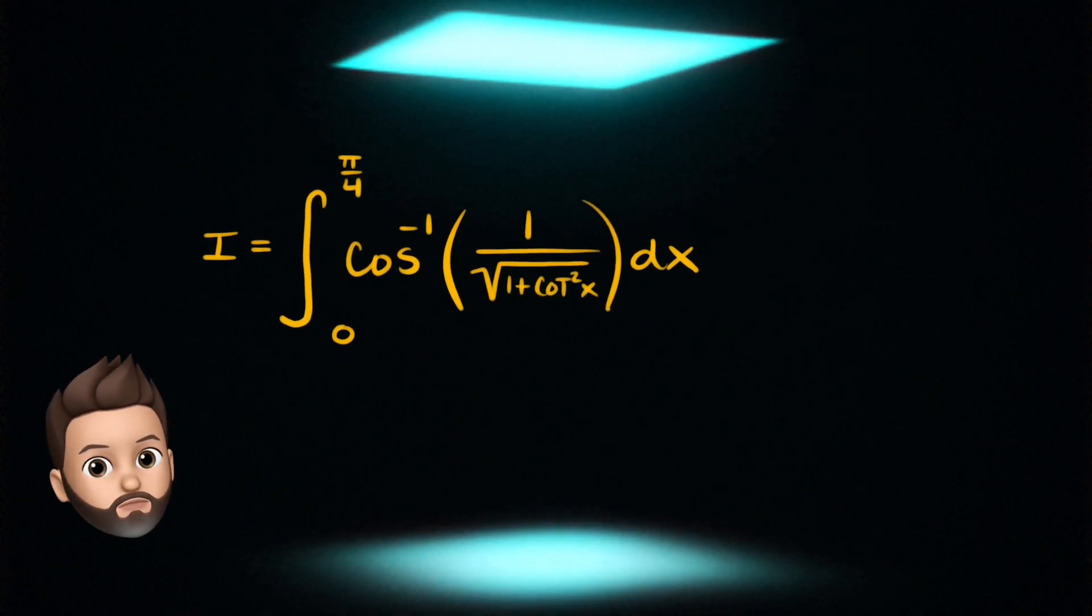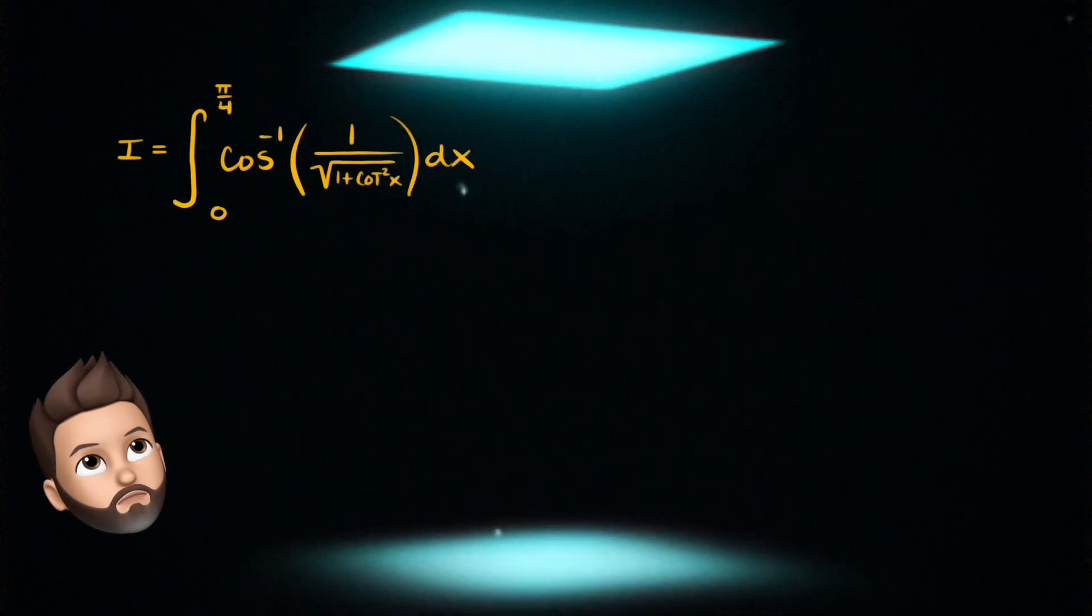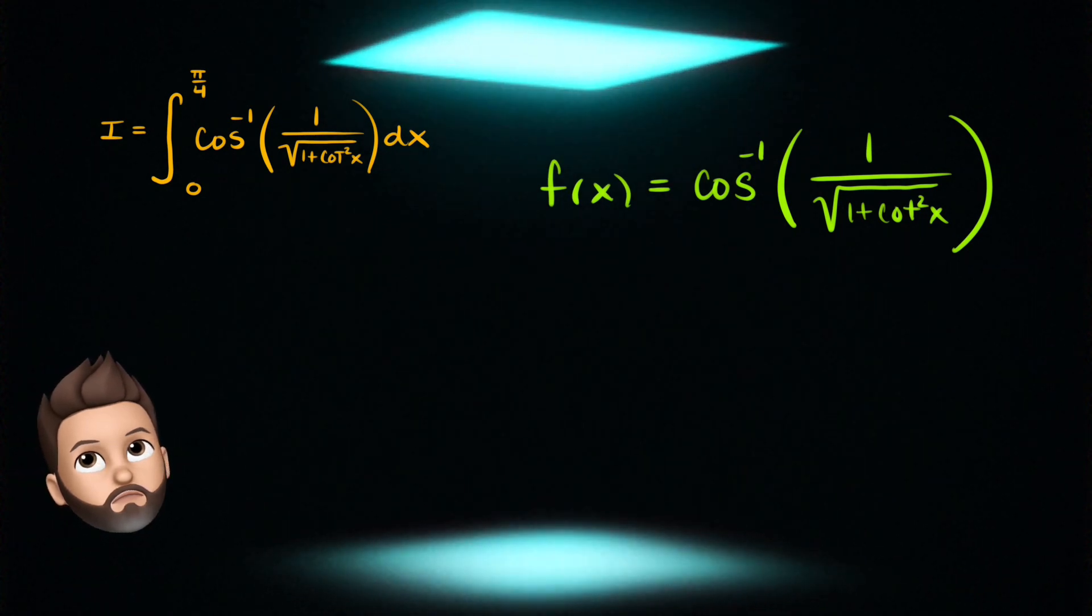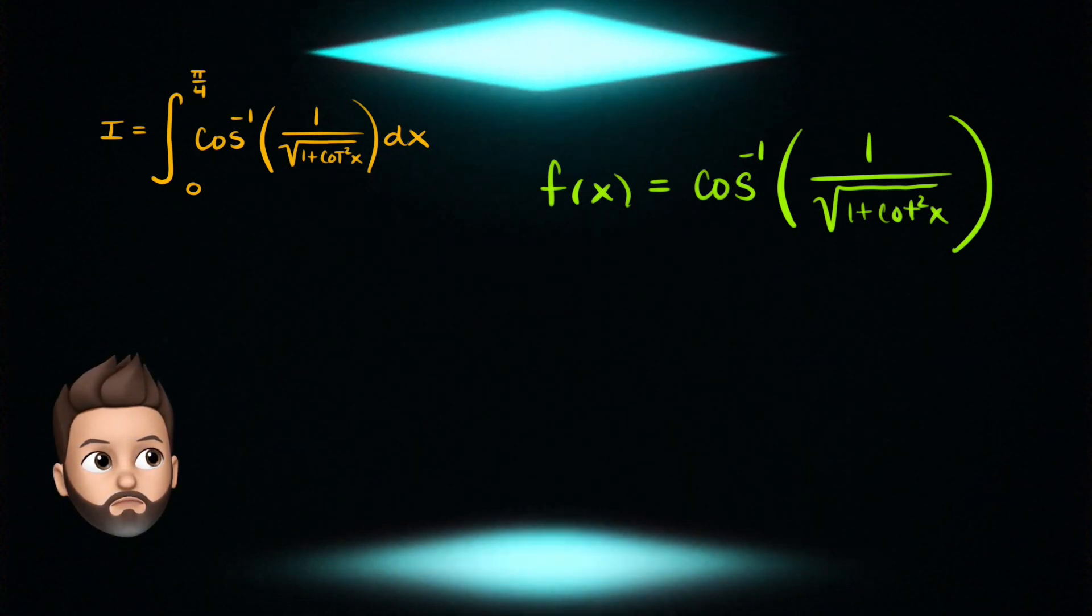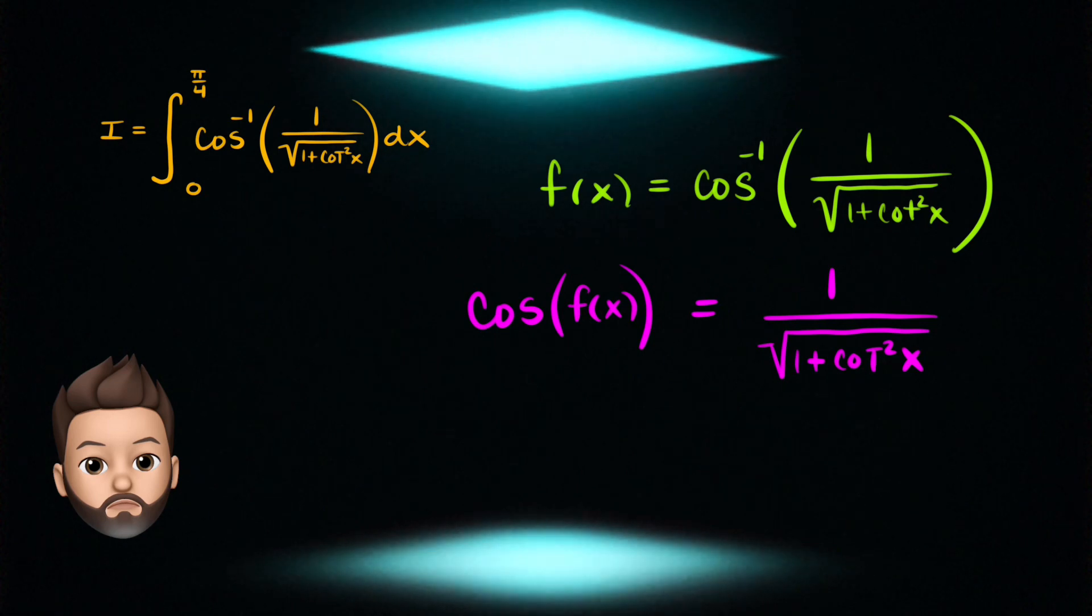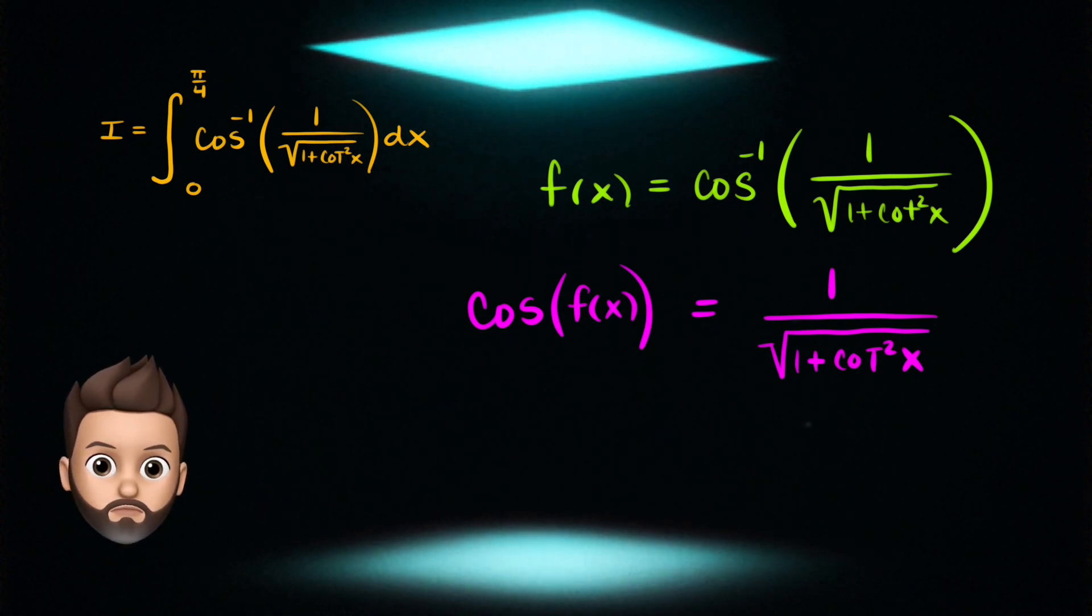All right, here we go. Our first observation is to look at the integrand, let's call it f. It's the inverse cosine of something. So my first inclination here is to actually take the cosine of both sides of this equation, therefore we're leaving the right-hand side of that inverse cosine.